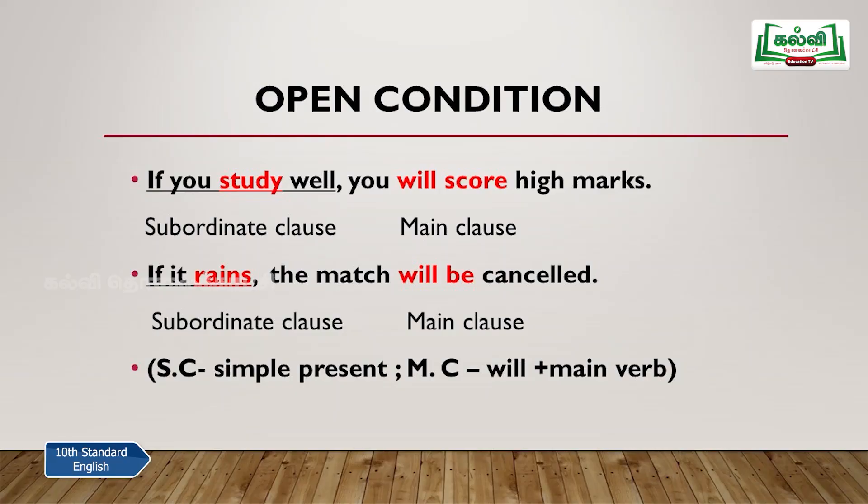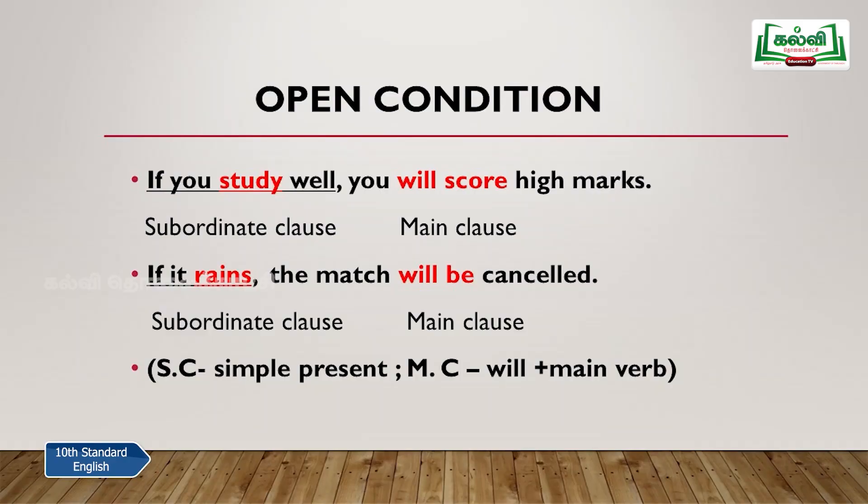In the open condition, if something will happen, we follow with the same result — everybody would accept it as true for anyone. For example: 'If you study well, you will score high marks.' This is openly stated: on condition that if it happens, the result will follow. The subordinate clause always accompanies 'if'. 'If you study well' is the subordinate clause; 'you will score high marks' is the main clause.